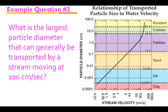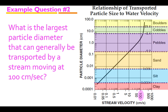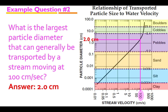Another example question: what is the largest particle diameter that can generally be transported by a stream moving at 100 centimeters per second? We have the same stream velocity, but now we're looking for a particle diameter. Locate 100 centimeters per second on the graph, take that up to the data line, then bring it over to the y-axis where it says particle diameter. Traveling at 100 centimeters per second, the largest particle diameter that can be transported is 2.0 centimeters.